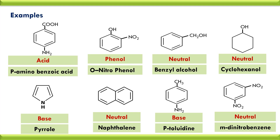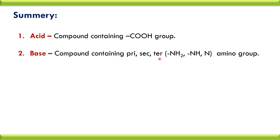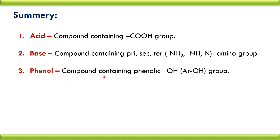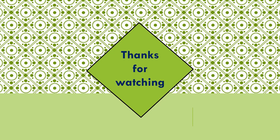Thus we can easily distinguish acid, base, phenol, and neutral by considering these facts: Acid — compound containing COOH group. Base — compound containing primary, secondary, or tertiary amino group. Phenol — compound containing phenolic OH, that is, OH group present on aromatic ring. Neutral — if compound is not acid, base, or phenol, then the compound is neutral. Thus all organic compounds are divided into these four types: acid, base, phenol, and neutral. I hope you understand acid, base, phenol, and neutral clearly. Make practice. Thanks for watching this video.